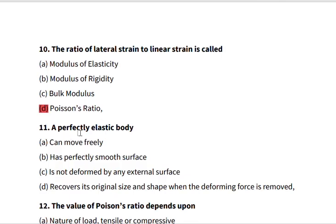Number eleven: a perfectly elastic body, if we say a body is perfectly elastic, what does it mean? Can move freely, has perfectly smooth surface, is not deformed by any external surface, recovers its original size and shape when the deformation or deforming force is removed. D is the answer. Elastic bodies are bodies which are able to recover its original shape and size when the deforming force is removed.